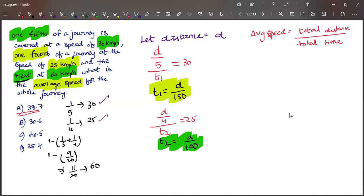And next, 11 by 20 of the distance, so 11D by 20 in t3 time at speed 60 kilometers per hour. From this, t3 equals 11D by 1200.